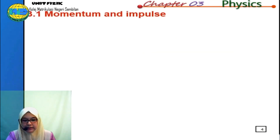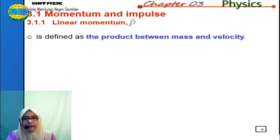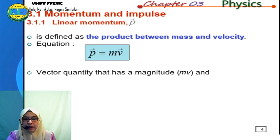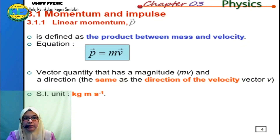Now we will learn subtopic 3.1.1, linear momentum. What is momentum? Momentum is defined as the product of mass and velocity, given by the equation p equal to mv, where p is momentum, m is mass, and v is velocity. Momentum is a vector quantity with magnitude mv and direction the same as velocity. The SI unit for momentum is kilogram meter per second.